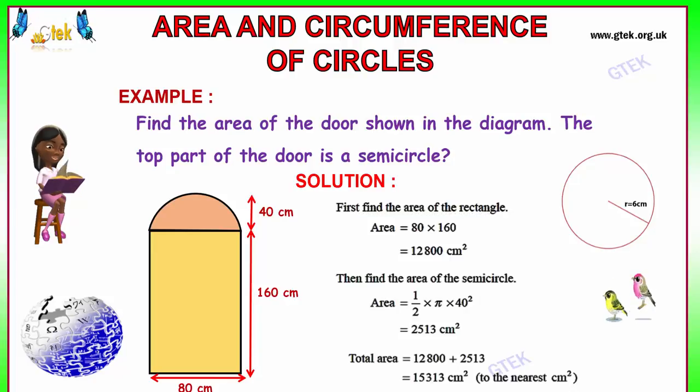Now we got the semicircle, and the semicircle's radius from the center to here is 40 cm. Area is equal to half into pi r square.